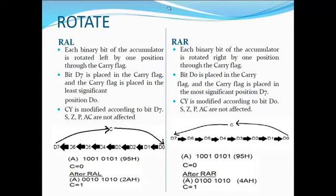In RAL, each binary bit of the accumulator is rotated right by one position through the carry flag. Bit D7 is placed in the carry flag, and the carry flag is placed in the least significant position D0. The carry flag is modified according to bit D7, and the other flags are not affected.